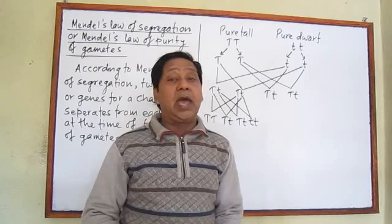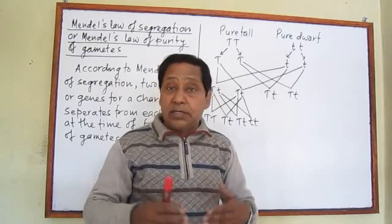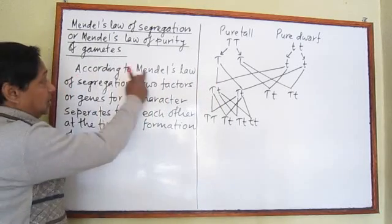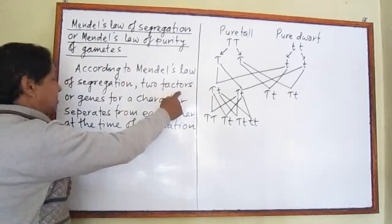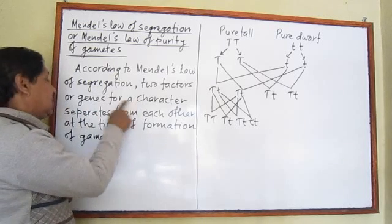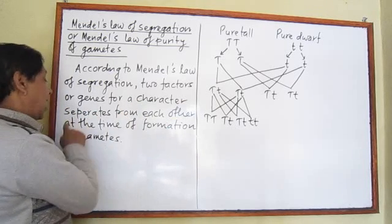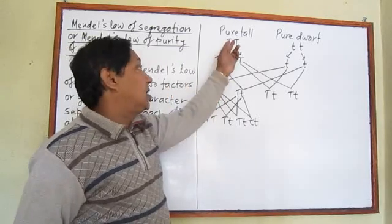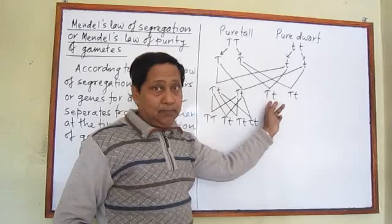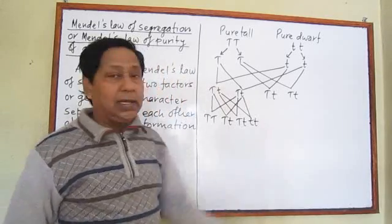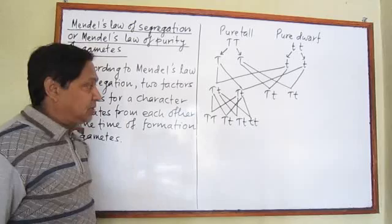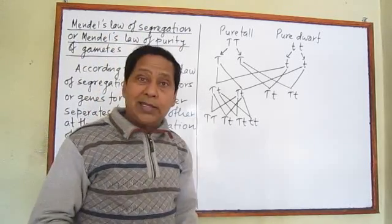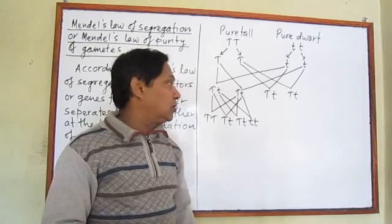He told that the two genes or two factors for a character always separate from each other when they form gametes. Gametes are formed by meiotic cell division. This is recognized as one of Mendel's important laws — it is called Mendel's Law of Segregation. According to this law, two factors or genes for a character separate from each other at the time of formation of gametes. This law is also called the Law of Purity of Gametes.